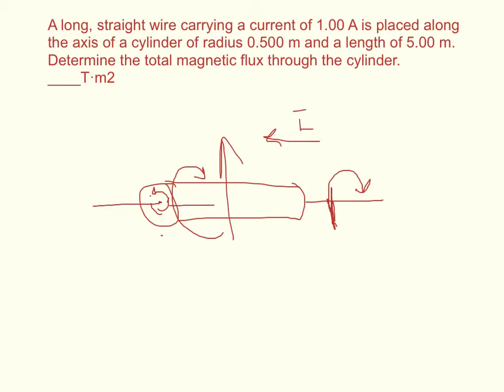So no part of the field lines will ever pass through the cylinder. The flux is equal to the amount of field lines that travel through the plane of the object. And since that's equal to zero, the magnetic flux must be zero.